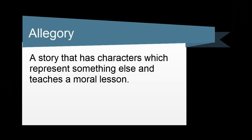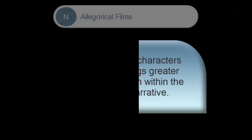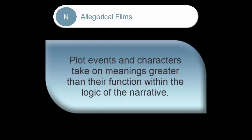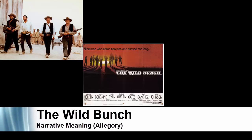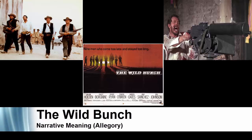In allegorical films, plot events take on meanings that are greater than their function within the logic of the narrative. Sam Peckinpah's The Wild Bunch, for example, can be interpreted as an allegory of American militarism in Vietnam. Upon its release, it raised a lot of eyebrows due to its excessive violence and callous attitudes of the protagonists.